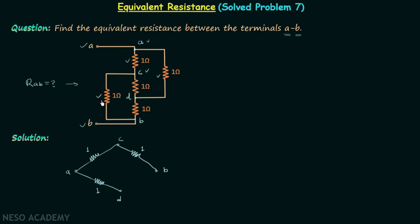Between B and D we have a 1 ohm resistor, and between C and D we have another 1 ohm resistor. We are now done with all 5 resistors from the original network.